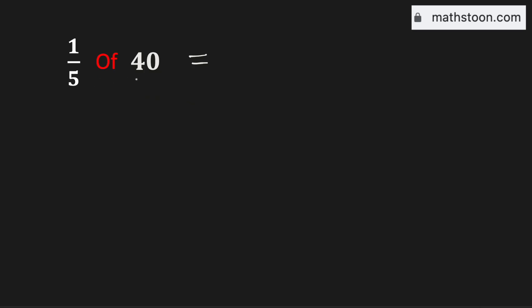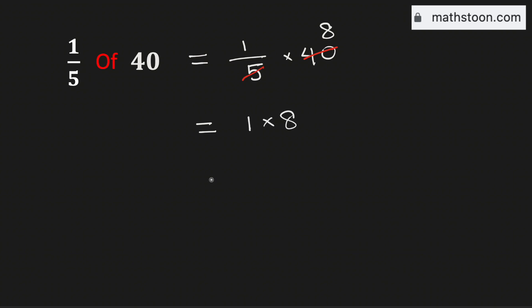In order to find one-fifth of 40, we will multiply one-fifth with 40. We know that 5 goes into 40 by 8 times. Therefore, this is just equal to 1 times 8, which is the same as 8.